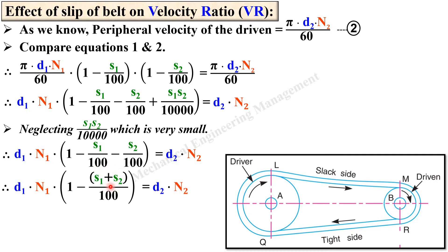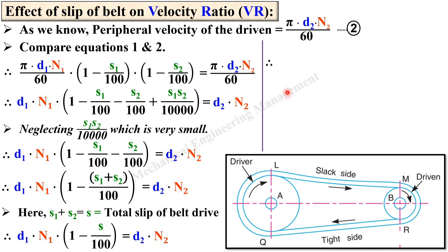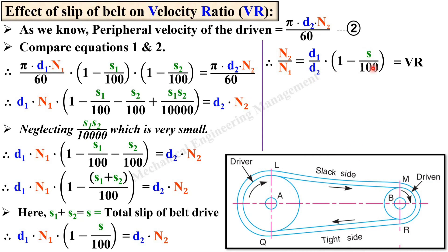So the final expression becomes: D1·N1 × (1 − (S1 + S2)/100) = D2·N2. Since S1 + S2 = S, where S is the total slip of the belt drive, this simplifies to D1·N1 × (1 − S/100) = D2·N2. Therefore the velocity ratio is: N2/N1 = (D1/D2) × (1 − S/100). This is the velocity ratio for the belt drive considering the effect of slip.